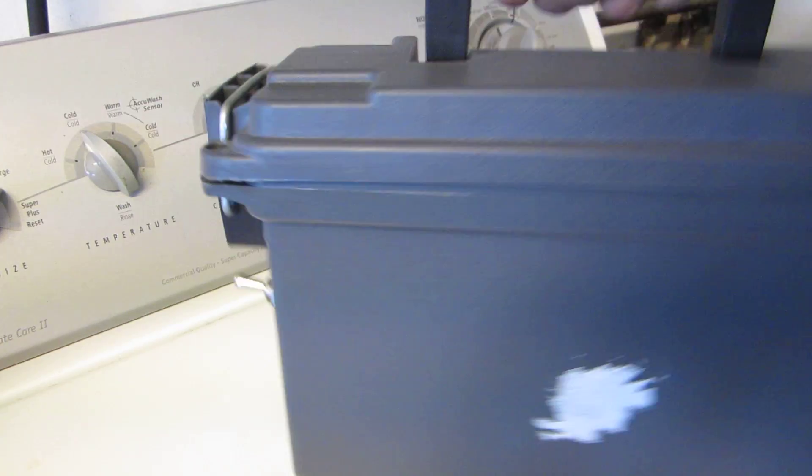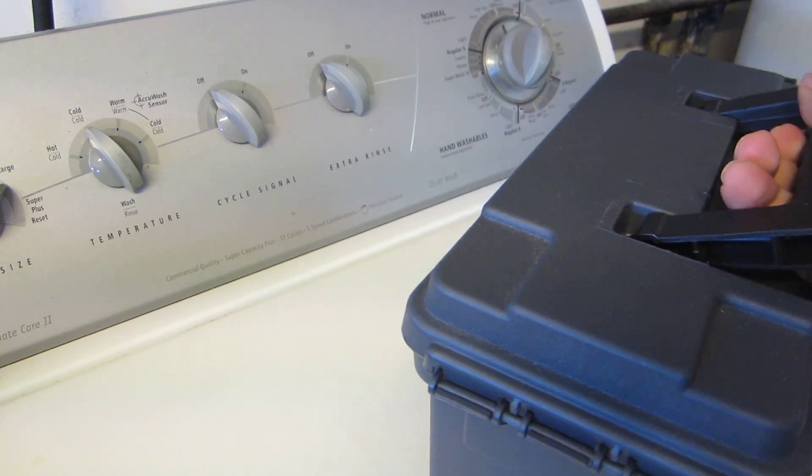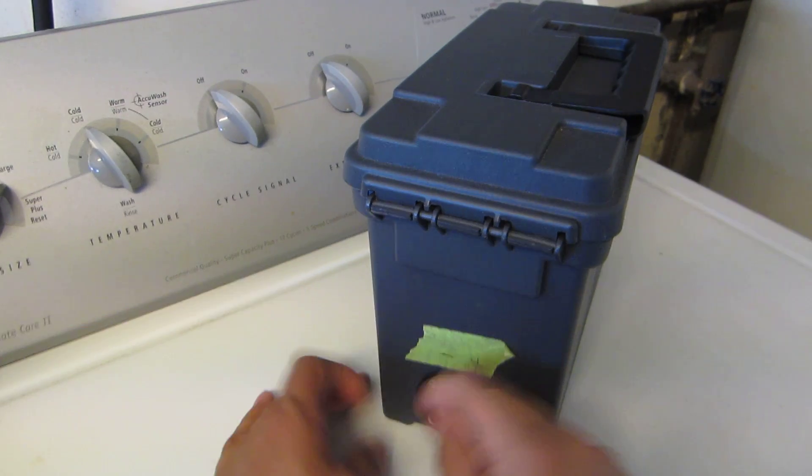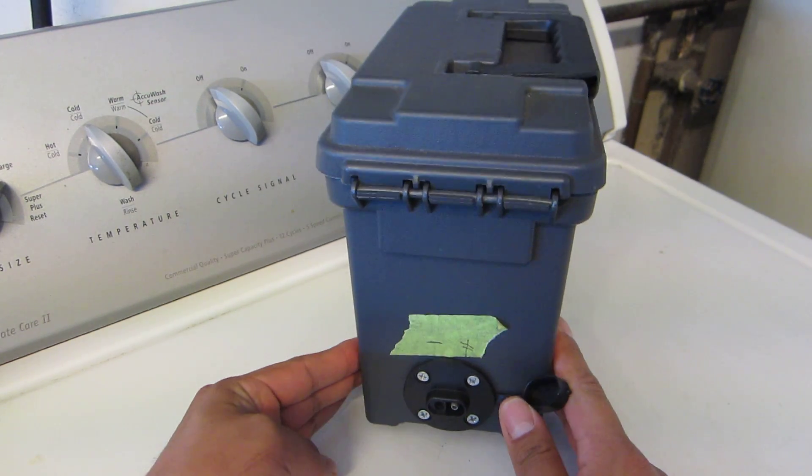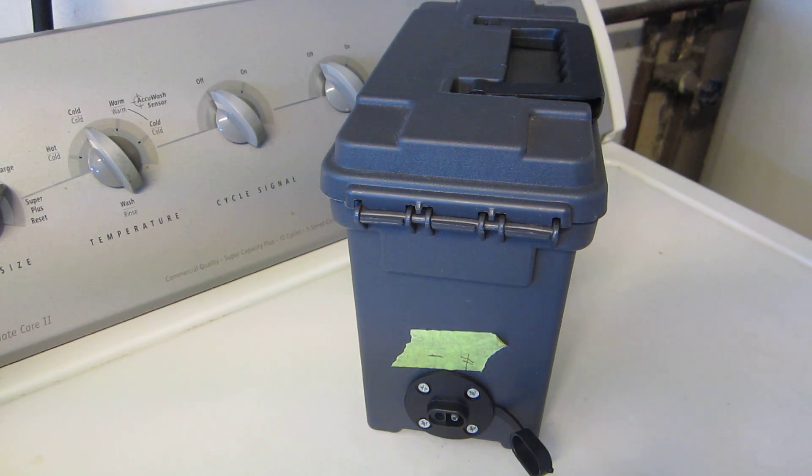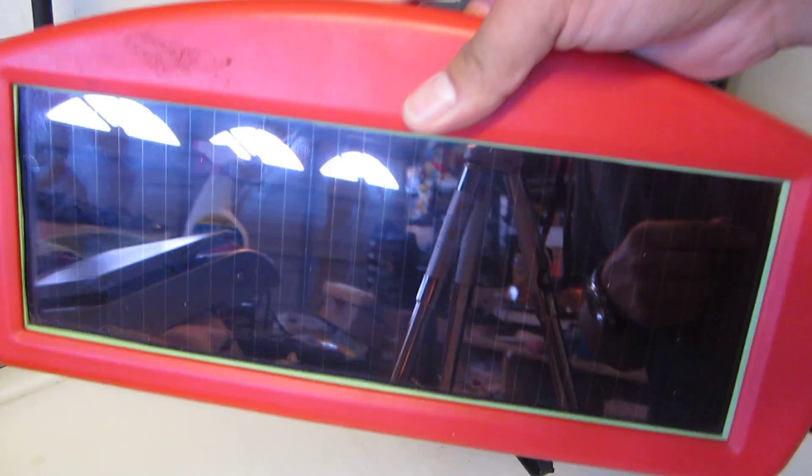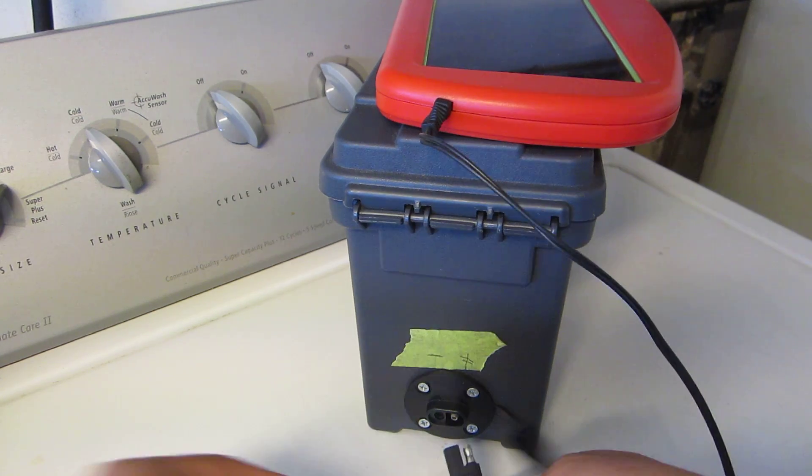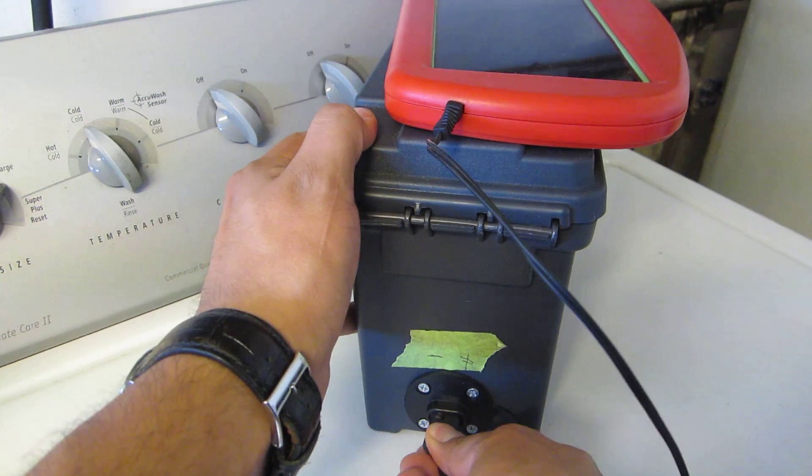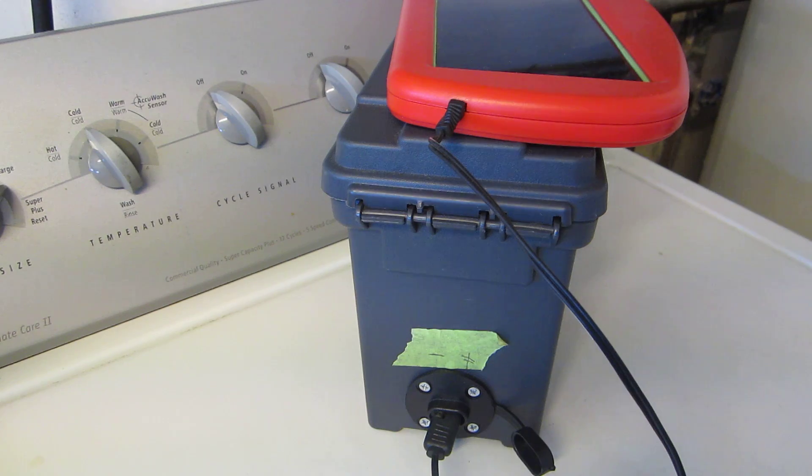The back has an SAE connector where you charge it. You can put 12 volts up to 10 amps because that's what the solar controller regulates at. I have a solar panel from Harbor Freight, which is just a battery maintainer with an SAE connector. I can just connect it and it will take a charge. This will keep it topped off.